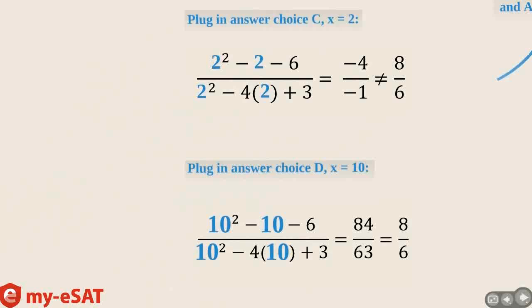Now, let's go ahead and Goldilocks in answer choice D, x equals 10. Solving this out, we get 8 over 6, proving this equation correct. Answer choice D is the correct answer.